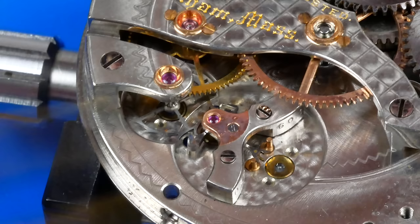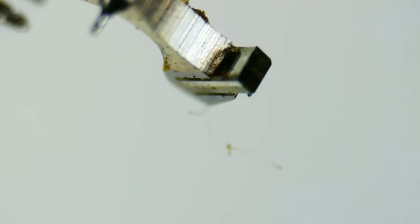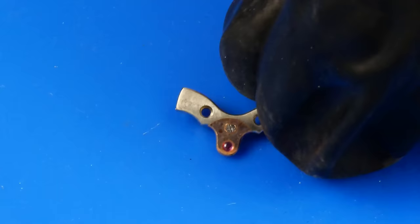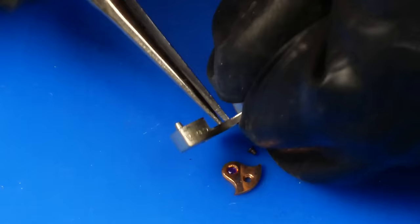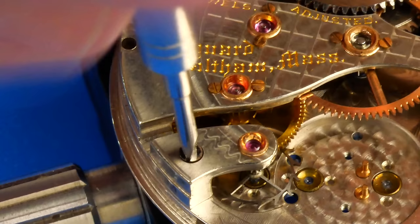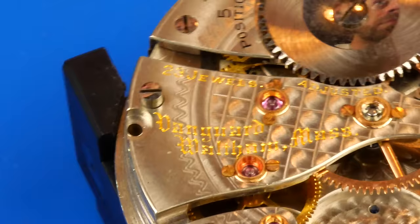First, I remove the pallet bridge and pallet fork. It's good practice to inspect every part as it's uninstalled to get an idea of any repairs needed. Inspection also must happen again after cleaning since all this debris could very well hide some damage. The pallet jewel is capped as well, which is common to find on these railroad grade movements. Looks fine, but you can see how debris made its way in between the jewels. This is why it's critical that these settings are separated for cleaning.